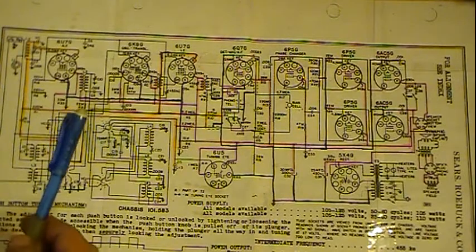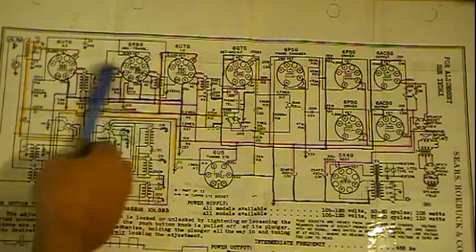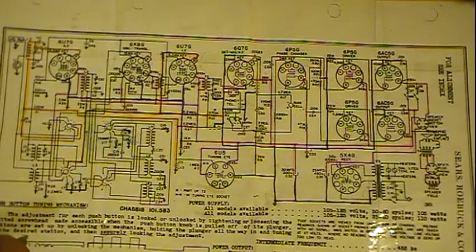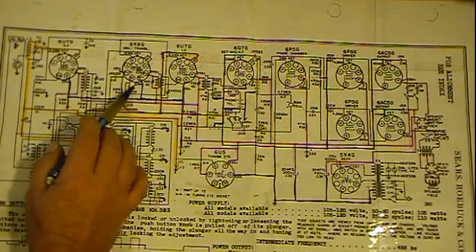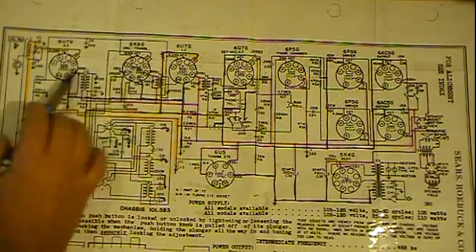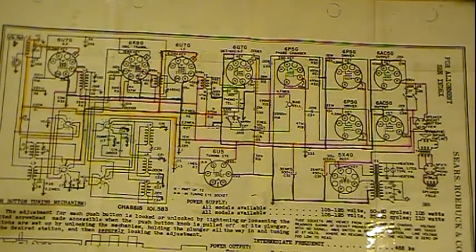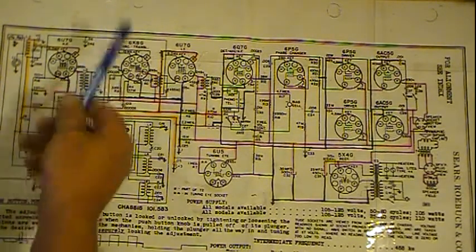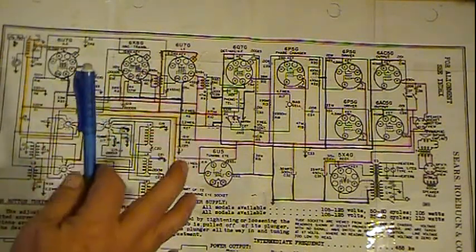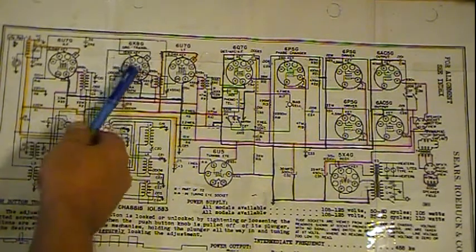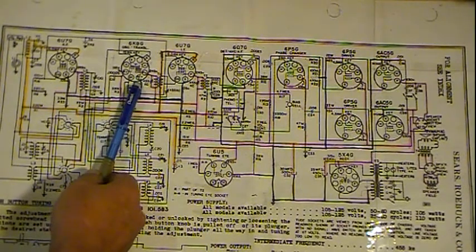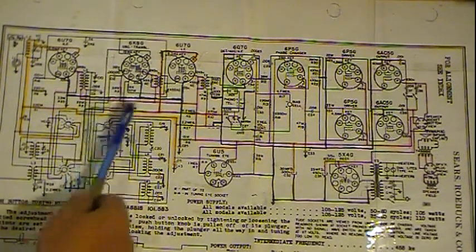One of the primary things was I did some voltage checks and found out that right in this area here it says 105 volts. These are the screen voltages to the front end tubes. They were off. They were low. The 6K8 to operate properly really wants to see 100 volts here or more, but at least 100. They were running around 90.